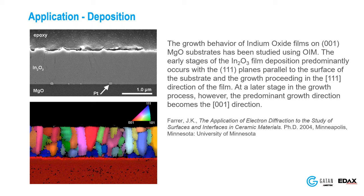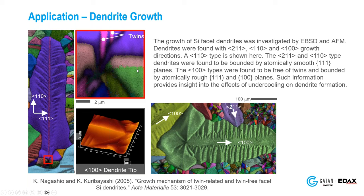Here's an example of dendrite growth where we've captured the growth of dendrites along with some AFM data. You can see how the dendrites grow in different directions — the green one is actually a 100 direction — and how twins form. You can get really informative data about surface roughness and how it correlates with crystallography and growth direction.